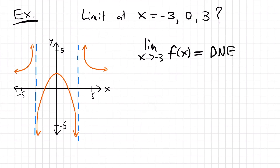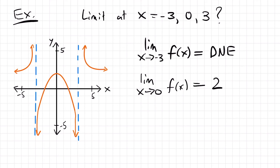How about the limit as x approaches 0? Starting from the right side, as we get closer to 0, we find ourselves at y equals 2. And from the left side, we also find ourselves at y equals 2. Both sides agree, so the value as x approaches 0 from both sides of the function is 2.